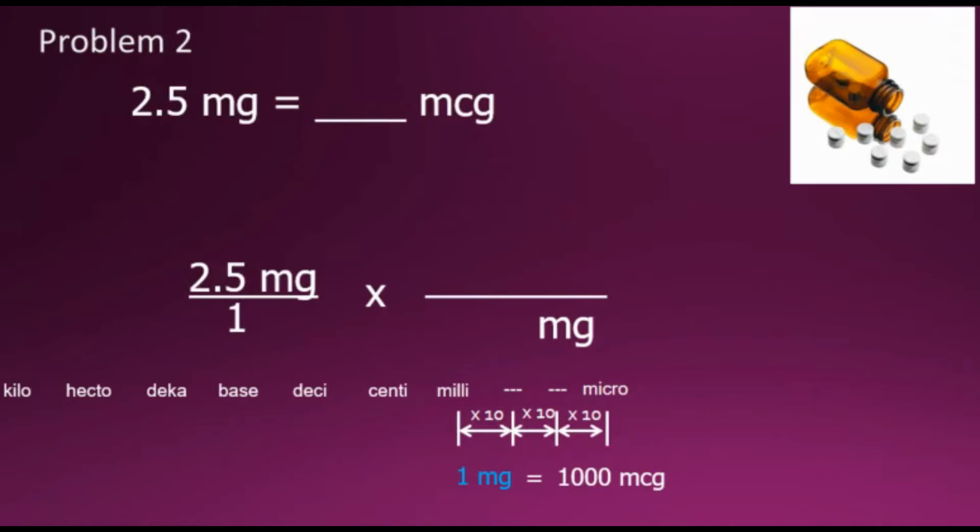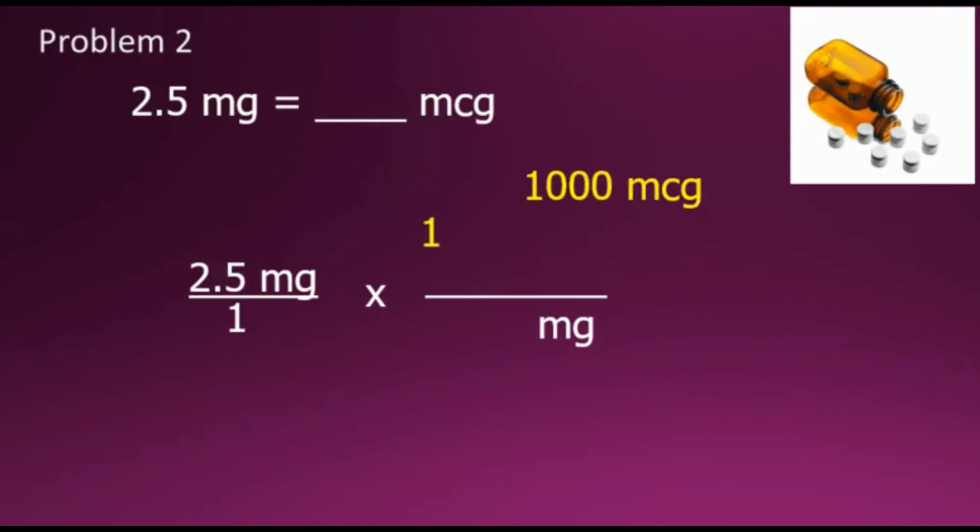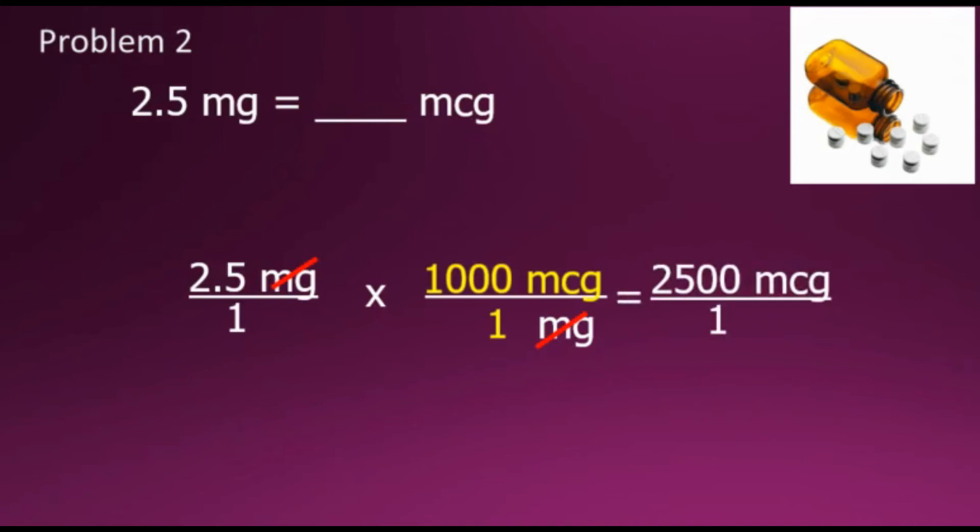Using this relationship, we can complete the conversion factor fraction by placing milligrams in the denominator equivalent to 1,000 micrograms in the numerator. This fraction has a value of 1. Multiplying by 1 doesn't change anything but does allow us to convert our units. Canceling out any common factor, which in this case is the milligrams, then multiplying numerators together and denominators, results in 2,500 micrograms over 1, which is 2,500 micrograms, the equivalent to the given value.